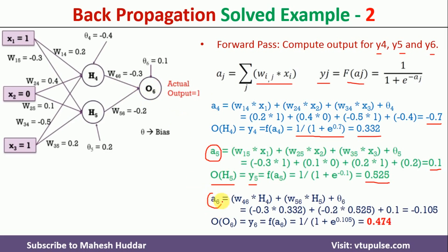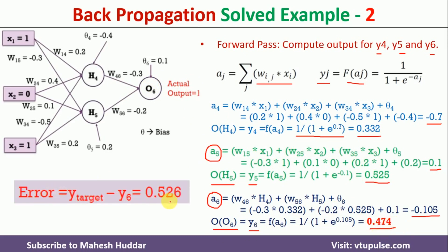We calculate the summation term for o6; the result is −0.105. Then we calculate the output at o6, which is y6 = 0.474. Once we have the output at the output layer, we calculate the error. The actual expected output is 1, and we calculated 0.474, so the error is 0.526.